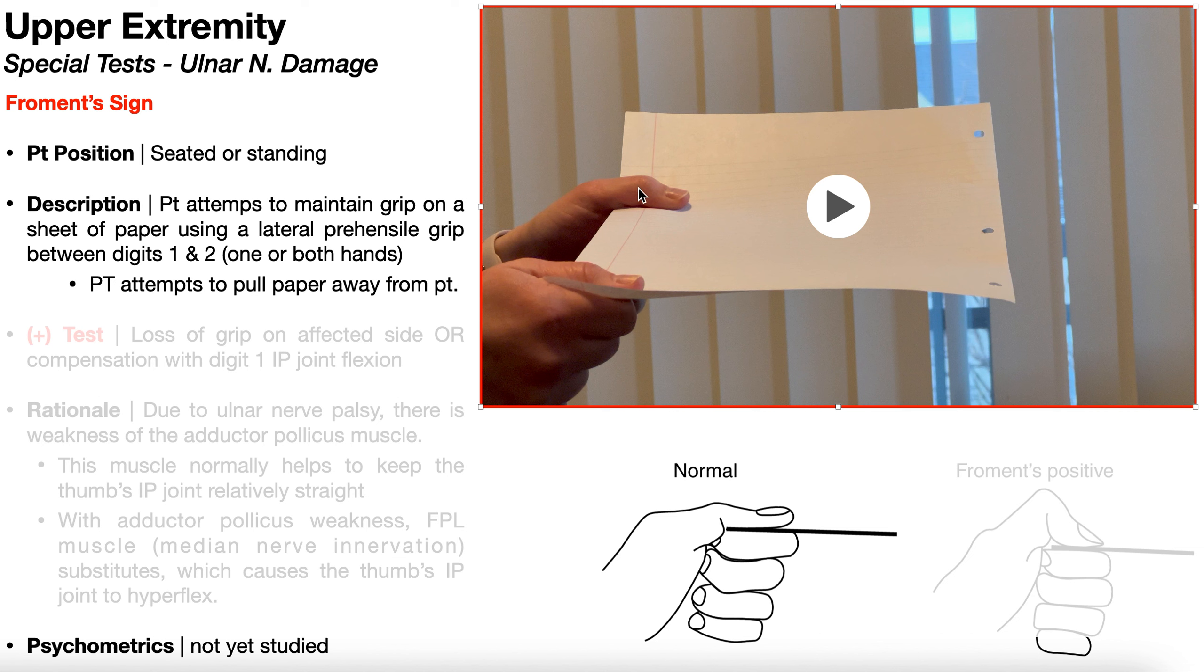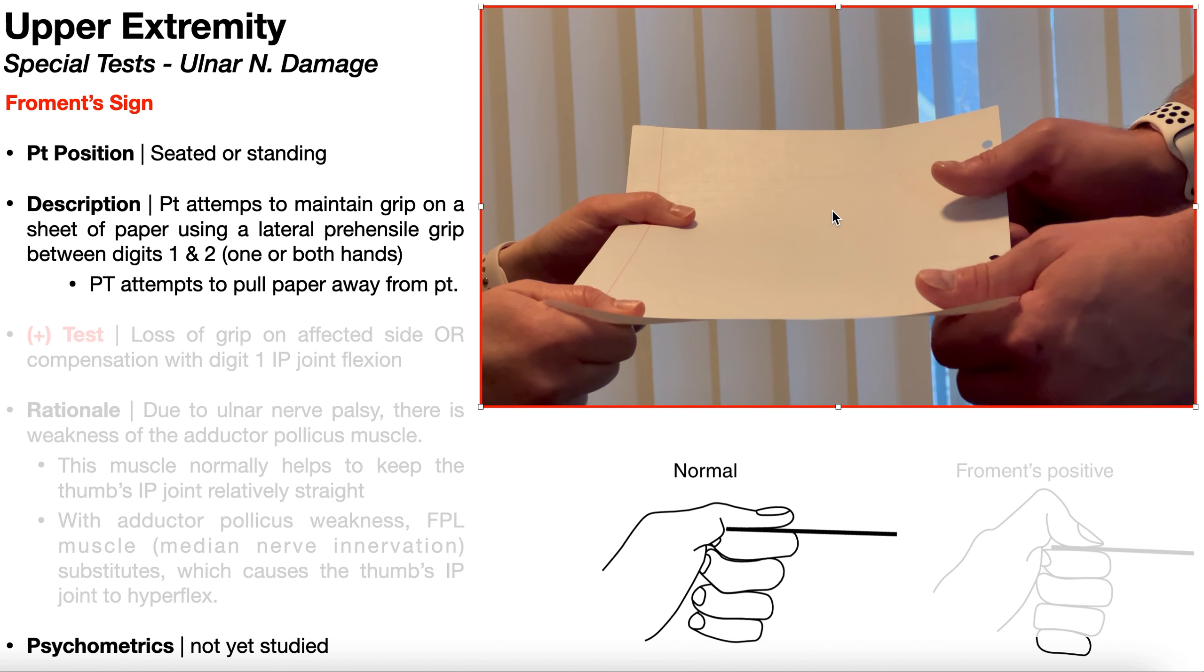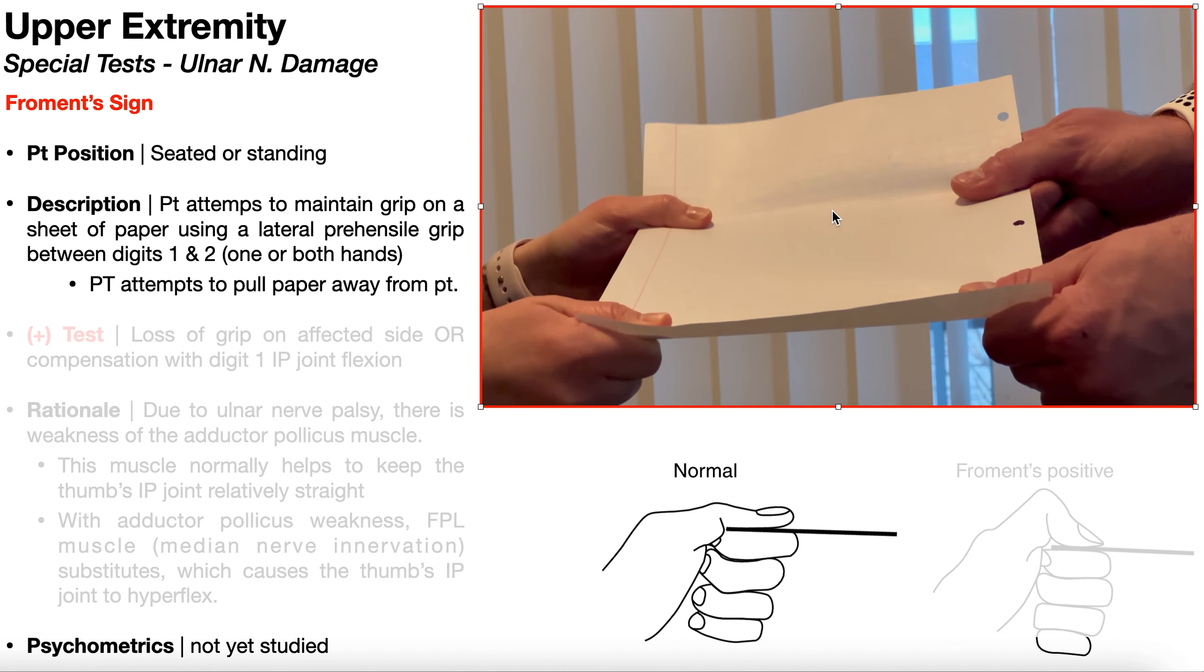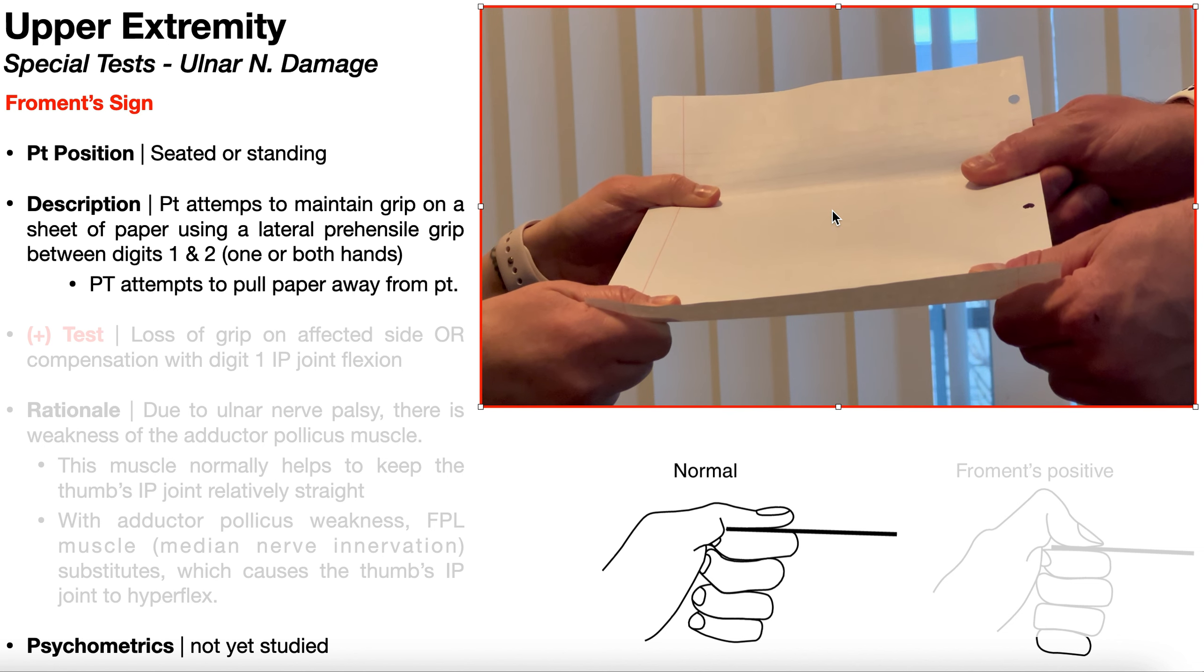In this test, the patient's going to attempt to maintain grip on a sheet of paper using this lateral prehensile grip between digits one and two, so between the thumb and the index finger. And you can do it with one hand at a time, in which case you're going to have to do it twice, or you can do it with both hands at the same time, like you see here. And the PT is going to attempt to pull the paper away from the patient, so it'll look something like this.